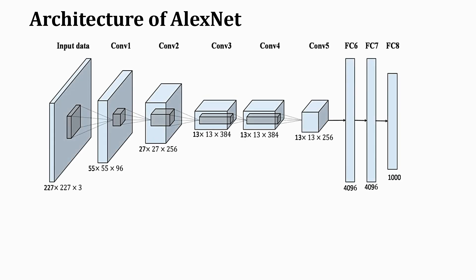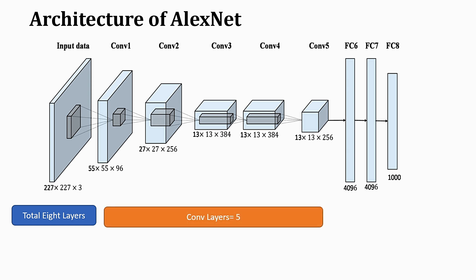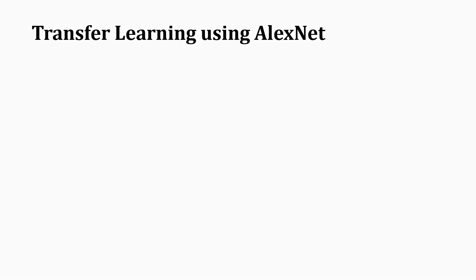Architecture of AlexNet: the AlexNet architecture contains a total of eight layers, which include five convolutional layers and three fully connected layers, also known as FC layers.